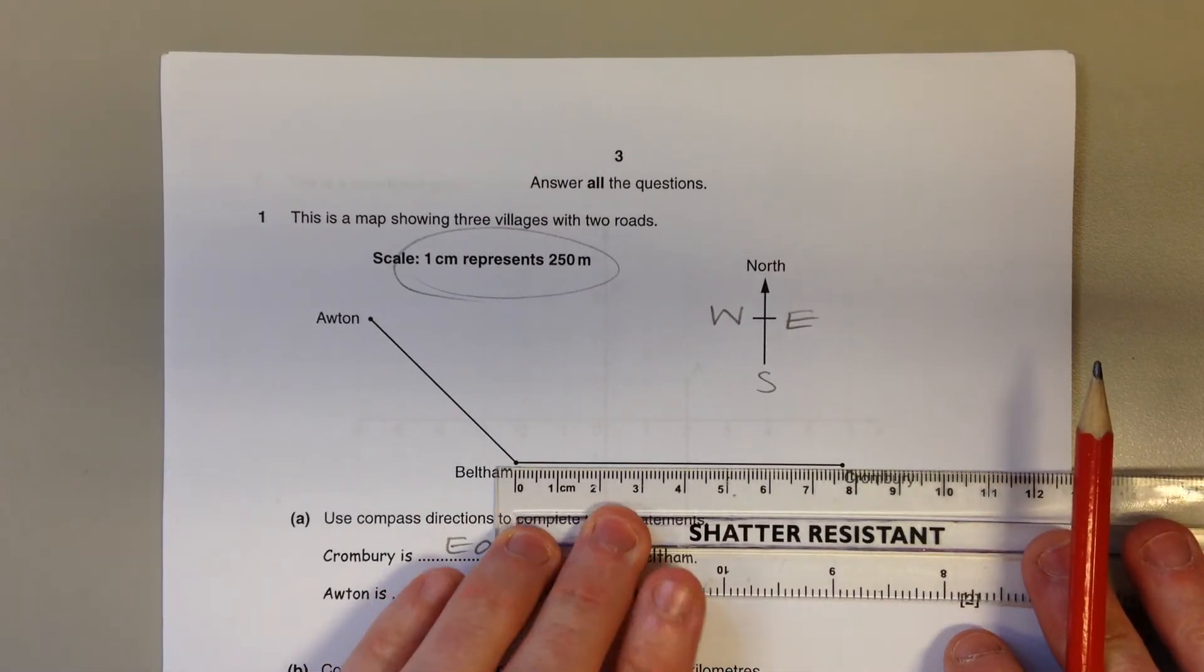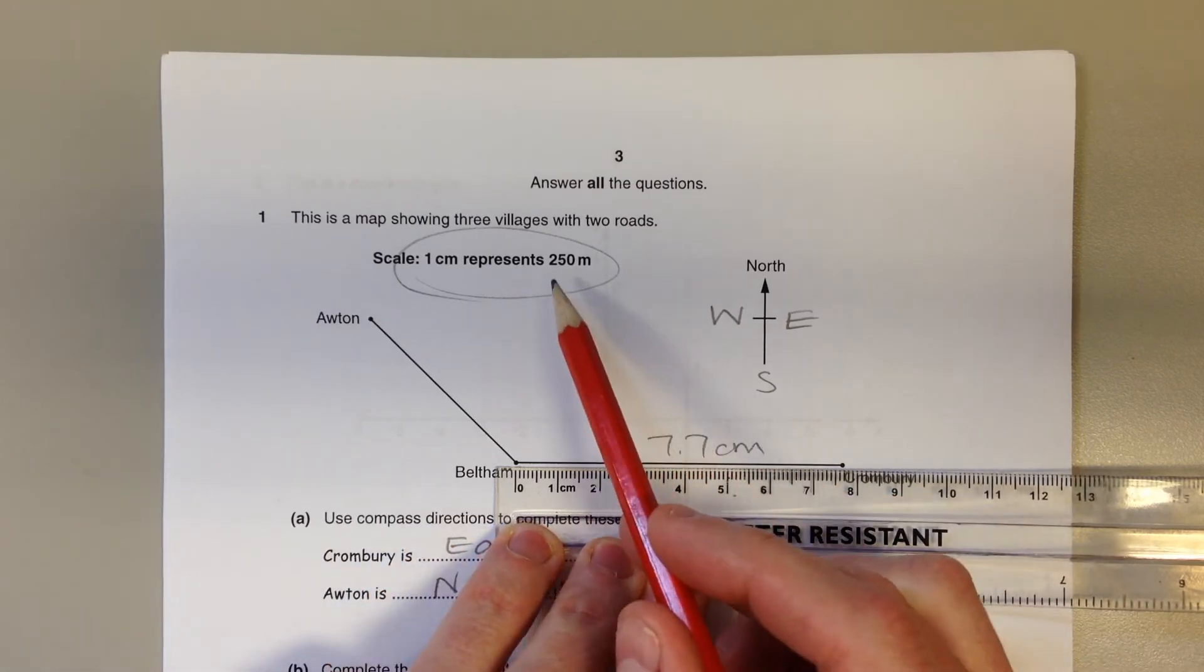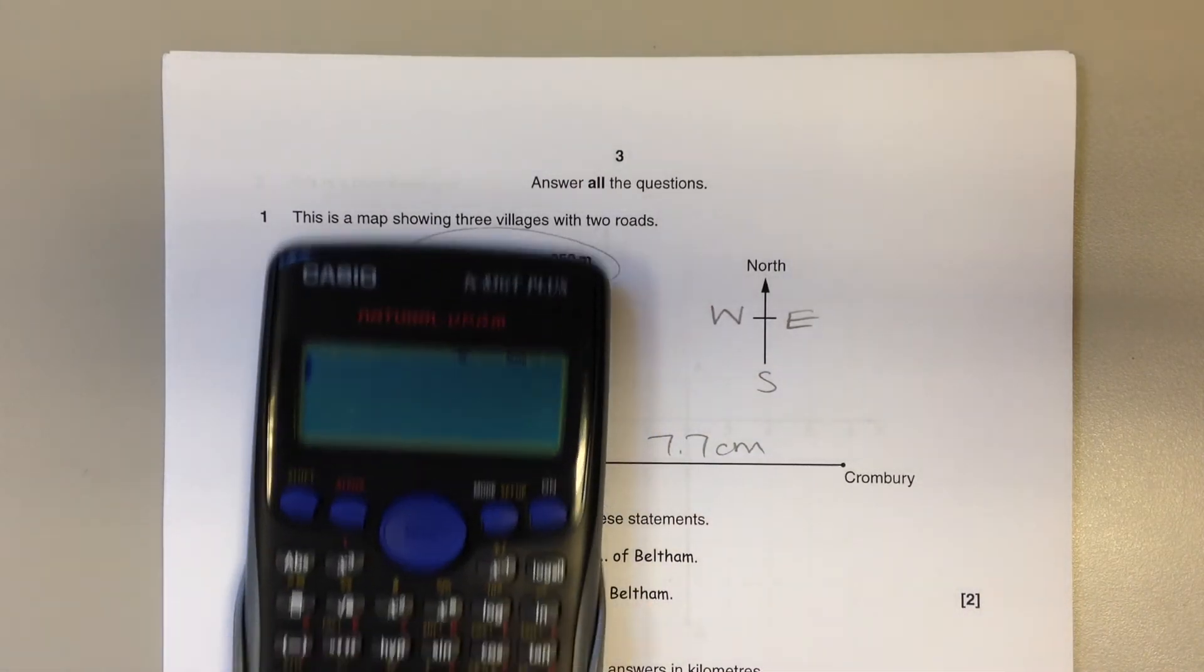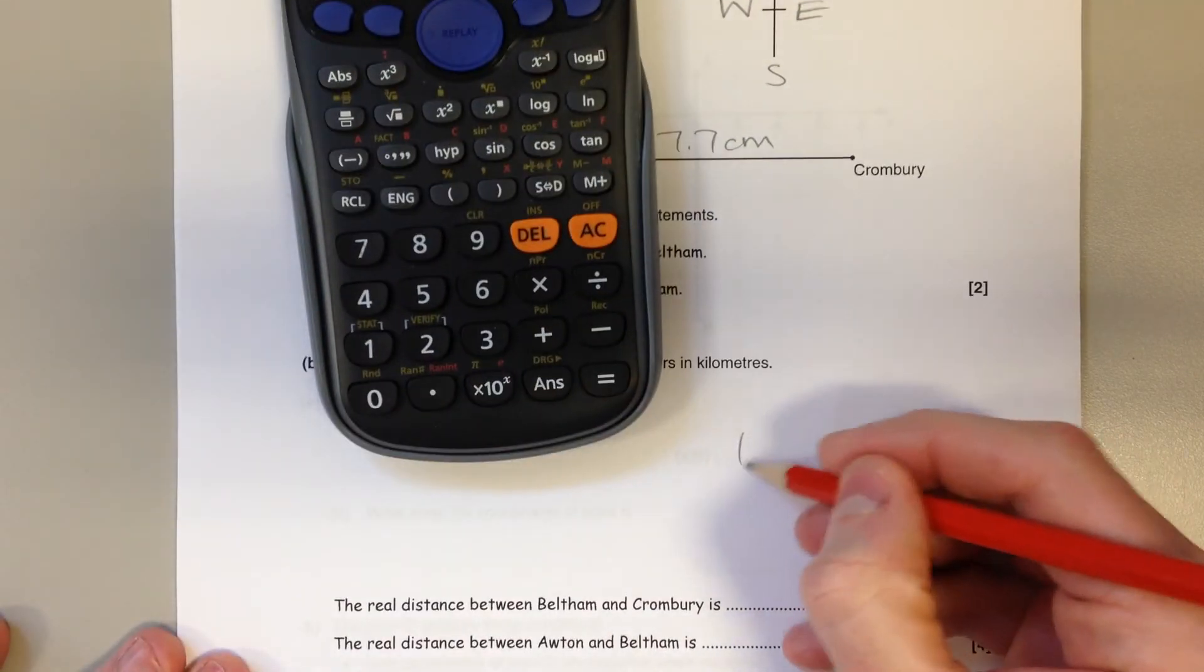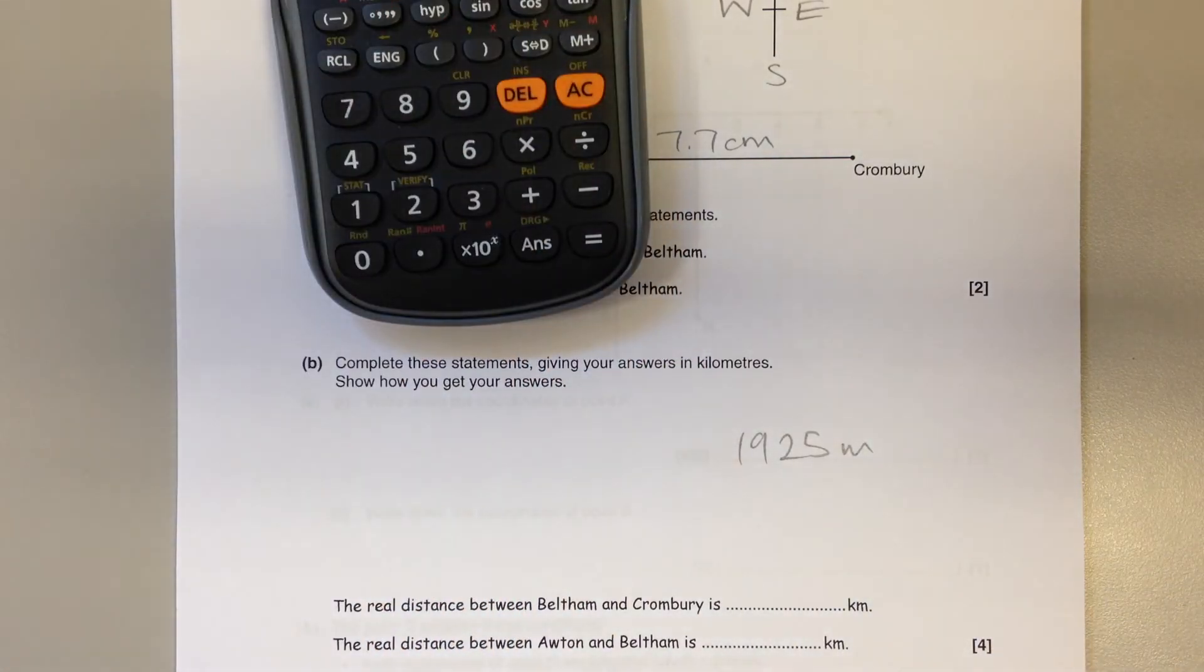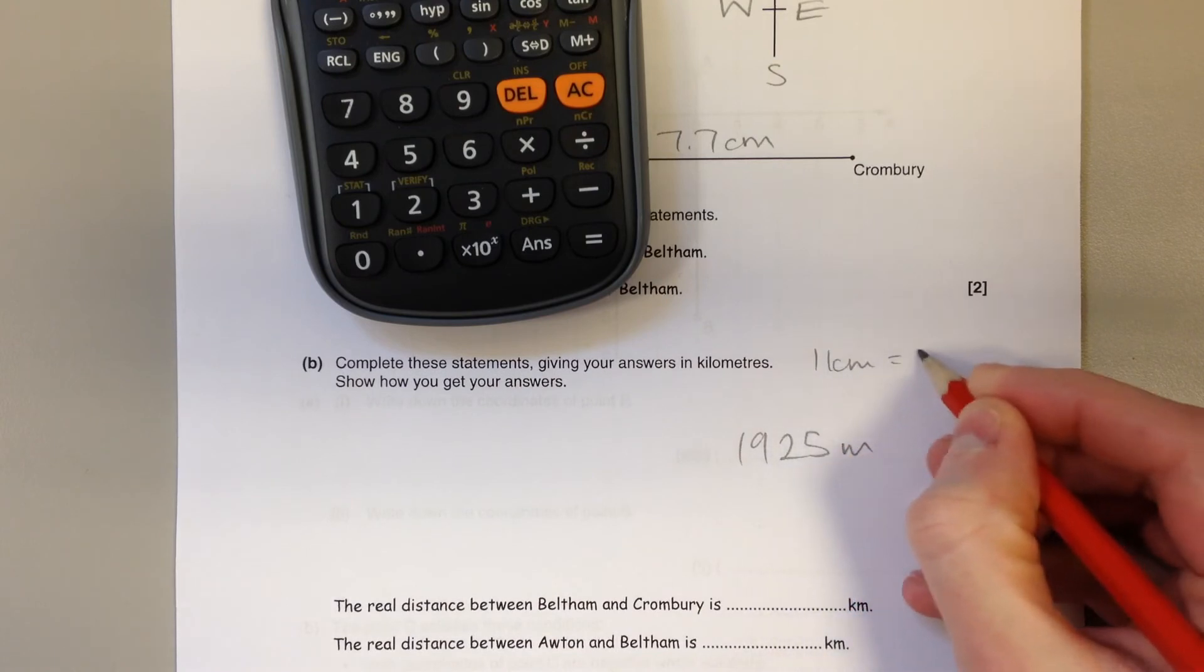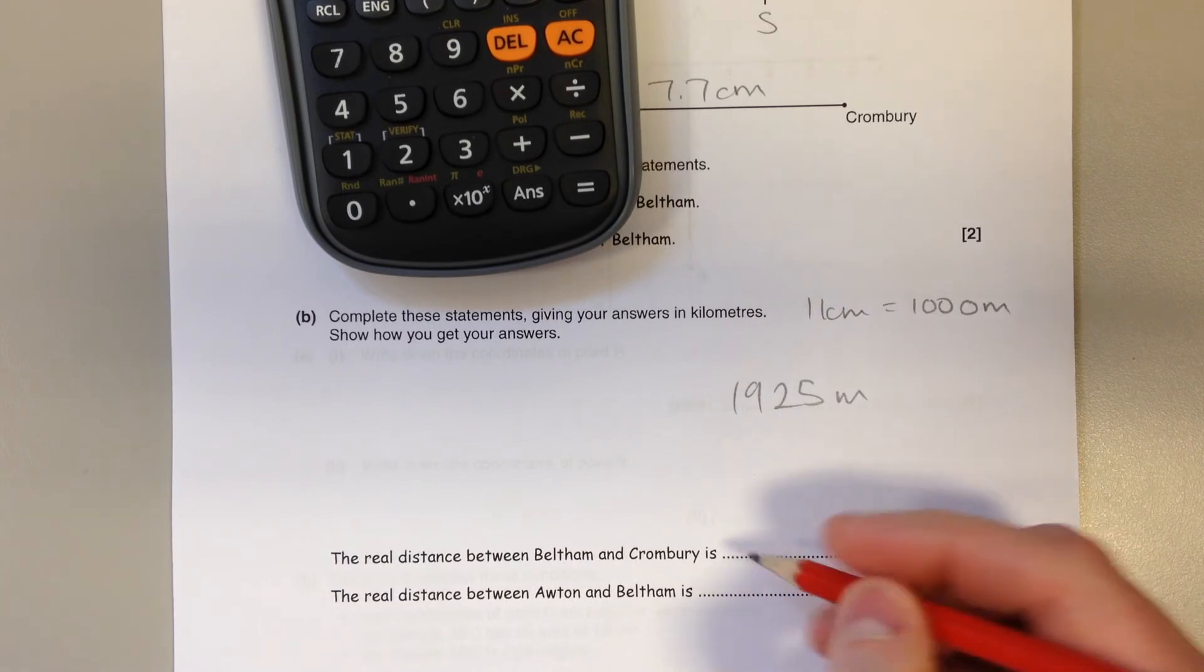That's 7.7 centimeters, which is 7.7 lots of 250 meters, which is 1,925 meters. But the question asks us to give our answer in kilometers. Every kilometer is 1,000 meters, so 1,925 meters is 1.925 kilometers.